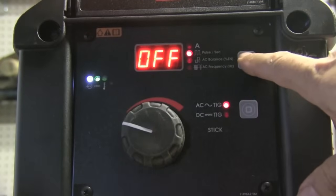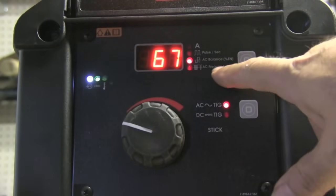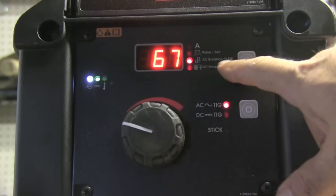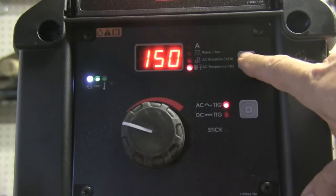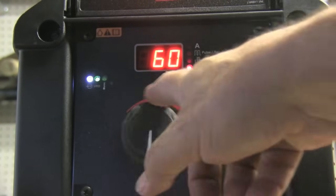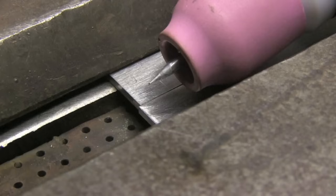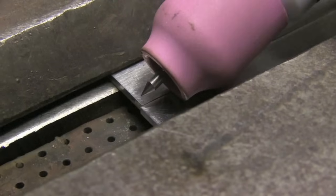I'm going to weld something a little thicker now, so I'm going to increase the amperage to 120, leave the AC balance at 67, and instead of 150 Hertz on the AC frequency, I'm going all the way down to 60—bottom of the range. Instead of using a real sharp electrode like this, I'm going to taper it more bluntly like this. That way I still get a nice pop off the tip of the electrode, but a nice stable arc with no wandering around, even when I taper off.